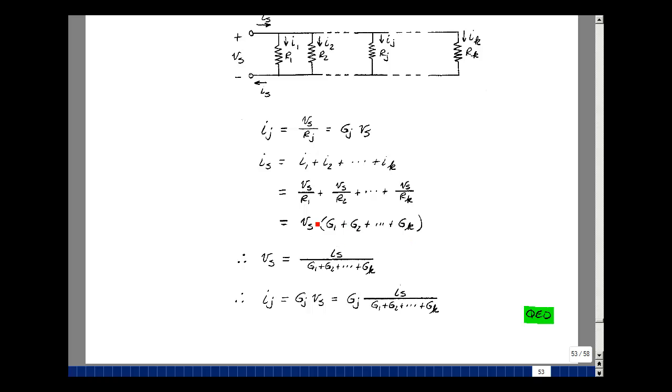Solving this equation, we could say that V sub S then is equal to I sub S divided by the sum of the conductances. And now we can substitute that back in. So the current in the jth element is going to be G sub J times this expression for V of S. Exchange these two, and you have the theorem above.